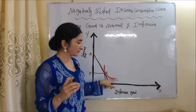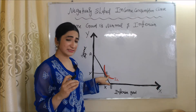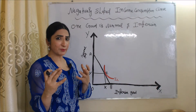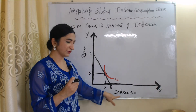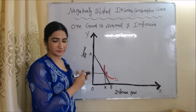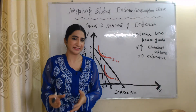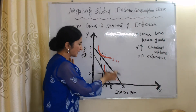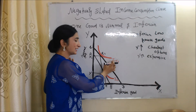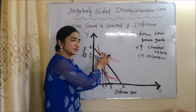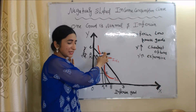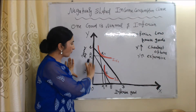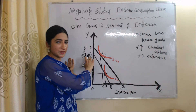At point E, the budget line touches the indifference curve, so E is the consumer equilibrium point. At this equilibrium point, the consumer is buying OX quantities of inferior good and OY quantities of normal good. Now suppose income increases. As income increases, the budget line shifts outward from AB to CD. CD is the new budget line, IC1 is the new indifference curve, and E1 is the new consumer equilibrium point, where the consumer is buying OX1 quantities of inferior good and OY1 quantities of normal good.